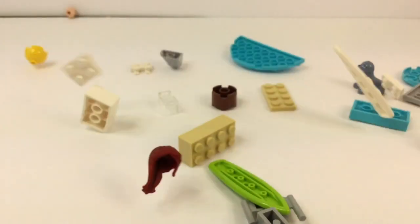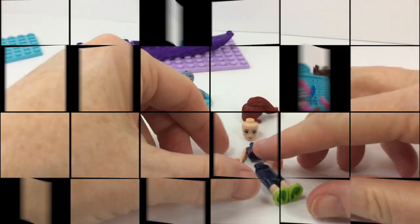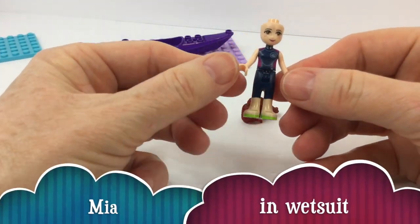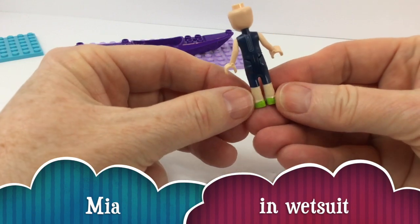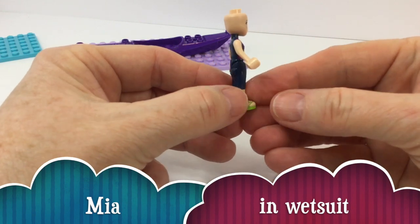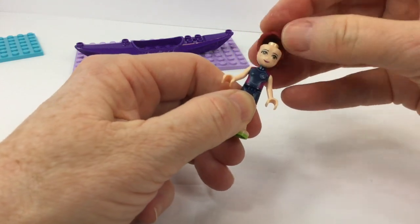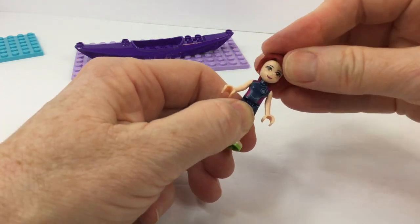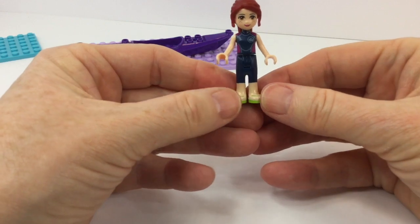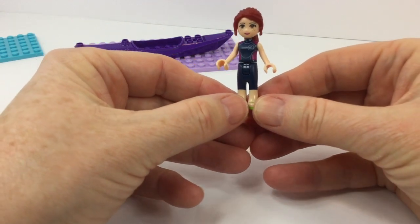And it has some surfboards and this adorable little seal, so we're excited. Here's Mia, she's in a wetsuit. You can see the zipper up the back and she's got these cute little green sandals on, and of course she's got her lovely red hair in a ponytail, so she's ready to get started.